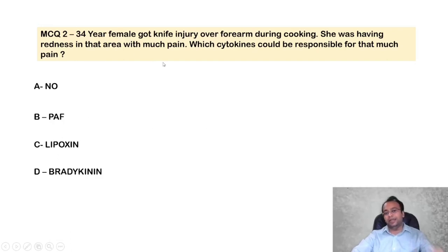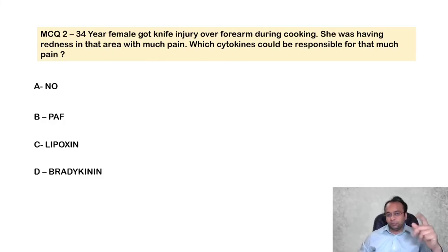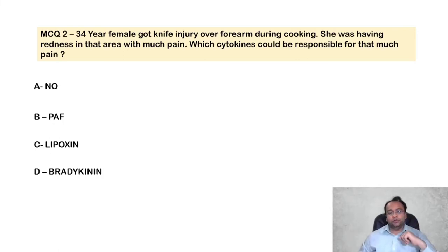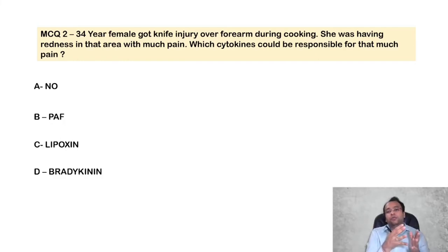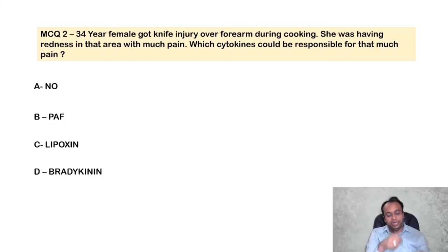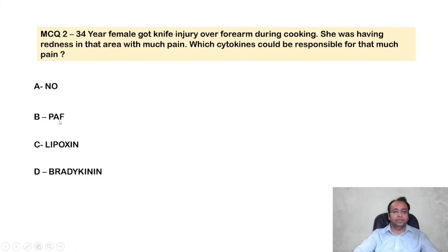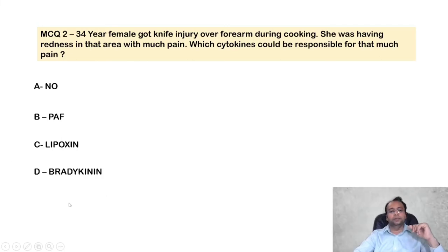MCQ 2: A 34-year-old female got a knife injury over the forearm during cooking and had redness with tremendous pain. Which mediator is responsible for the pain? Options: nitric oxide, platelet activating factor, lipoxin, or bradykinin. Nitric oxide and lipoxins have anti-inflammatory actions. Platelet activating factor does not cause much pain. Pain is mainly because of bradykinin. The answer is bradykinin.